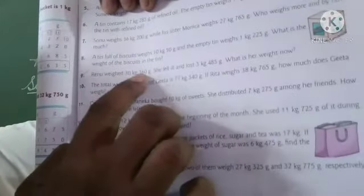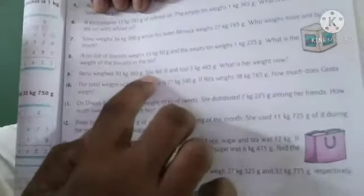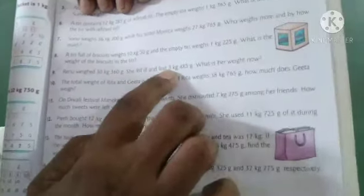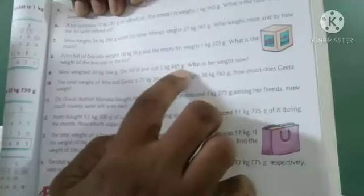Question number 9: Renu weighed 30 kg 360 grams. She fell ill and lost 3 kg 485 grams. What is her weight now?